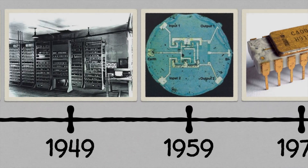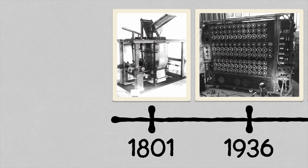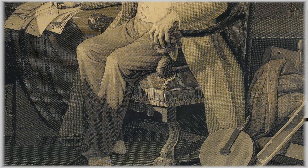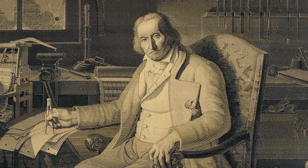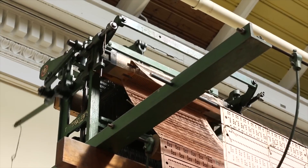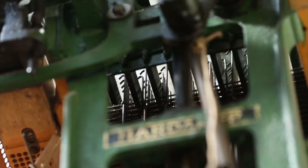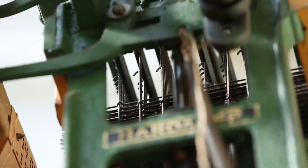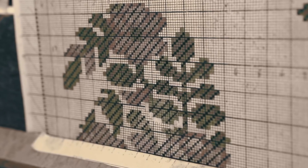It all started around only two centuries ago, in 1801, with Joseph-Marie Jacquard, a French inventor, who designed a knitting machine that uses punched wooden cards to produce fabric with complex patterns and designs.